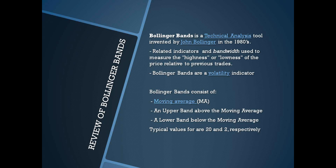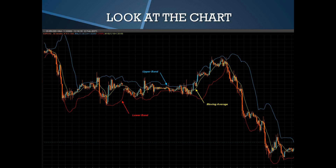Bollinger Bands are a volatility indicator. They consist of a moving average — I'll show you what the moving average is on the next page — an upper band and a lower band. On MetaTrader or any other platform, when you assign the Bollinger Band, you'll need to set up values. The typical values are 20 and 2. Let's see a small chart to see how we place the Bollinger Band.